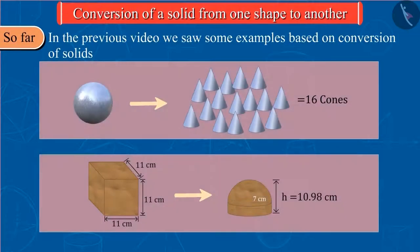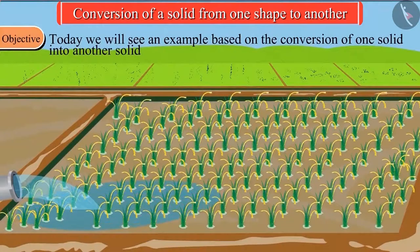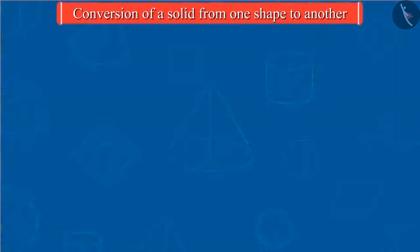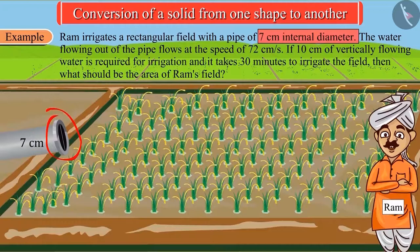Welcome to this video. In the previous video we saw some examples based on conversion of solids. Today we will see some more examples. Ram irrigates a rectangular field with a pipe of 7 centimeter internal diameter.